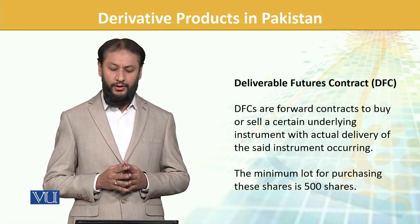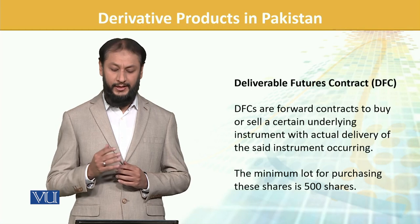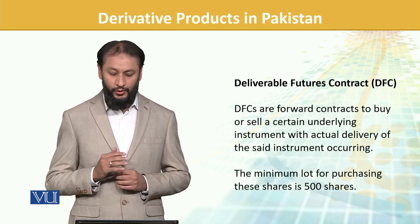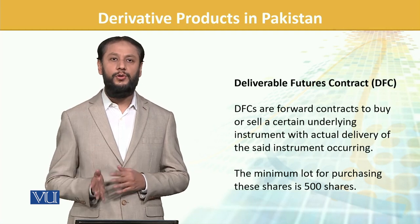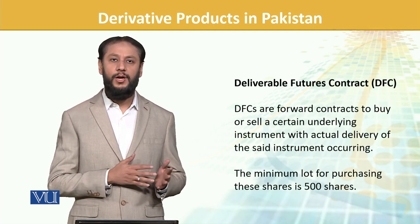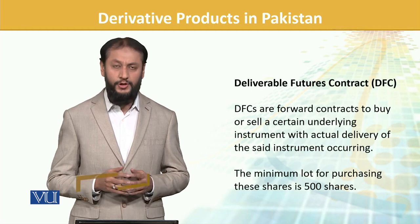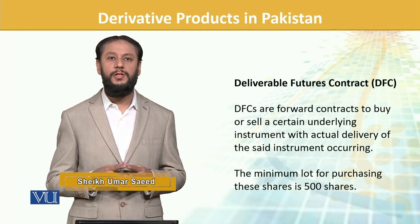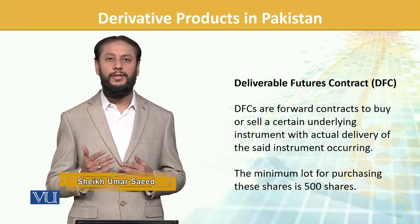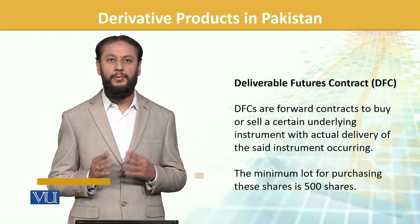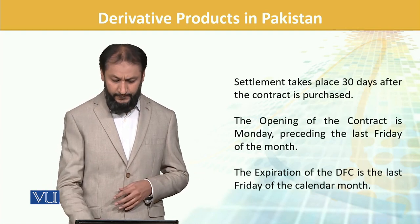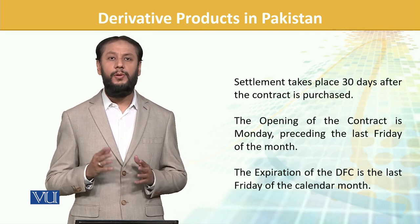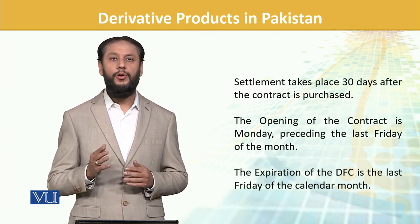Deliverable Future Contracts (DFCs) are agreements to buy or sell certain underlying instruments with actual delivery of that instrument. The actual instrument will change hands. The normal minimum slot size is standardized at 500, though in some cases when the valuation is very different the slot also changes. Settlement takes place 30 days after the contract is purchased — normally a one-month cycle.